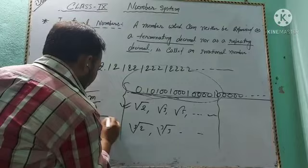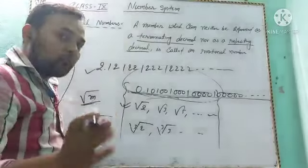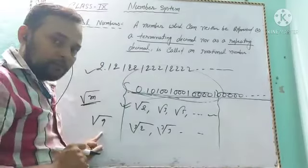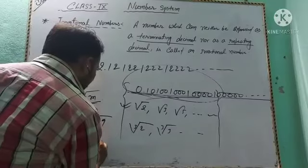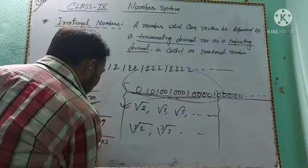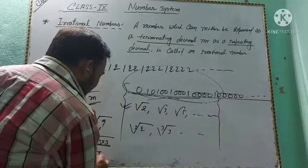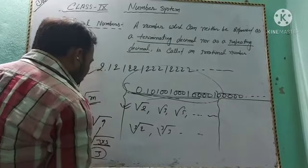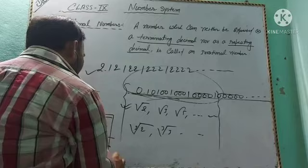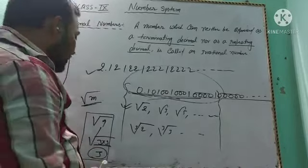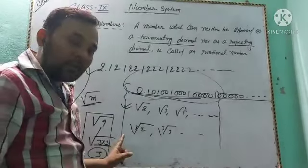However, √9 is not irrational because 9 is a perfect square — it can be written as 3×3, so √9 = 3, which is a rational number.